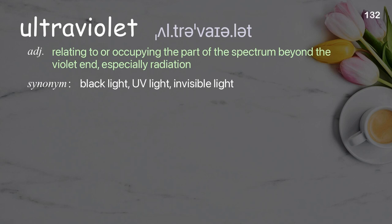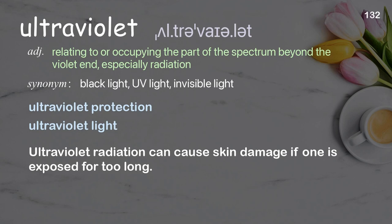Ultraviolet: Relating to or occupying the part of the spectrum beyond the violet end, especially radiation. Examples: ultraviolet protection, ultraviolet light. Ultraviolet radiation can cause skin damage if one is exposed for too long.